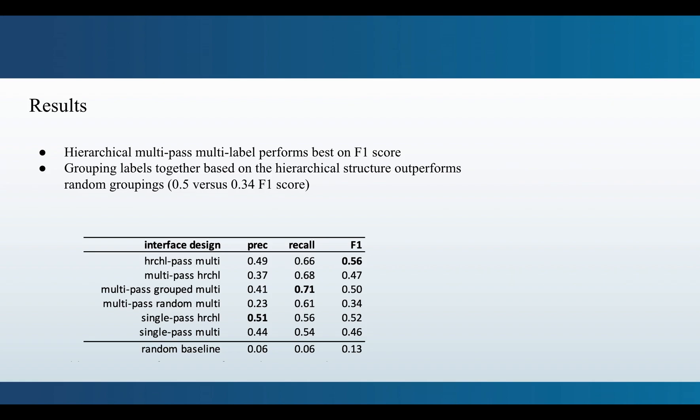Generally we see that labeling schemes which use the taxonomy structure outperform those that do not. In a head-to-head comparison where we either give the workers a random subset of the labels to annotate or give them a subset which are all immediately grouped together within the hierarchical structure, the latter outperforms the former. Grouped has an F1 score of 0.5 versus random's 0.34.